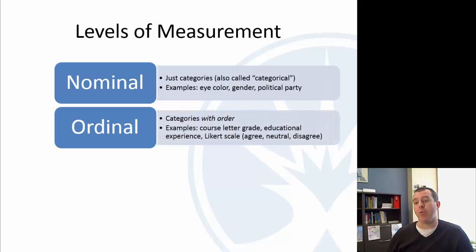Ordinal is categories, but now they have order. So like course letter grade. It's just a category, A, B, C, D, but A is higher than B, which is higher than C, etc. A Likert scale, whether you agree or neutral or you disagree. Educational experience, master's degree, bachelor's degree. A master's degree is more education than a bachelor's degree. So there's that order, but it's still just a category.